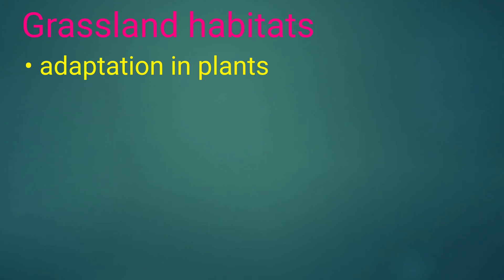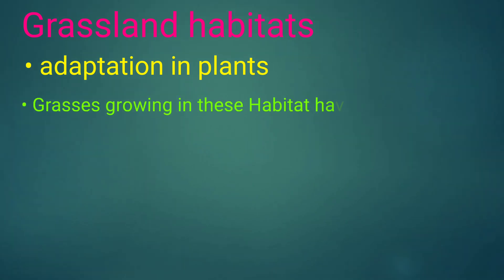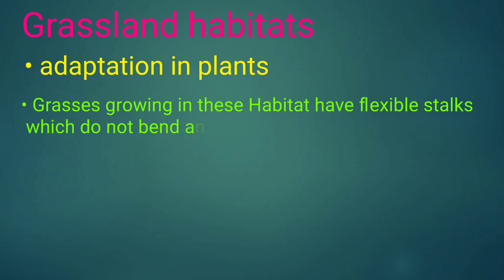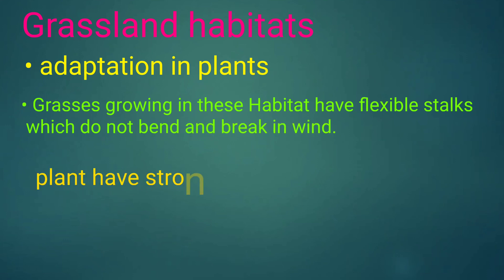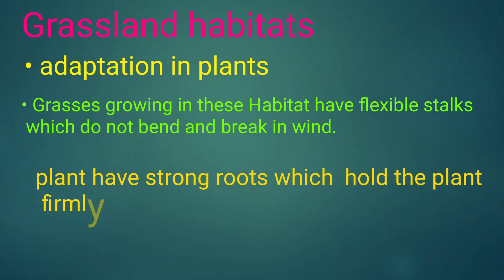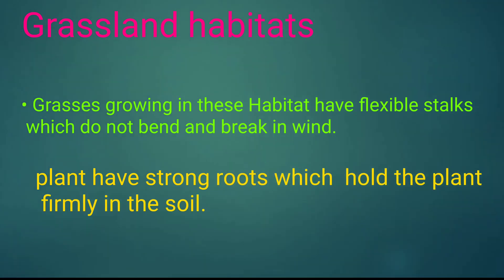Grassland habitats. Adaptation in plants: Grass growing in these habitats have flexible stalks which do not bend and break in wind. Plants have strong roots which hold the plant firmly in the soil.